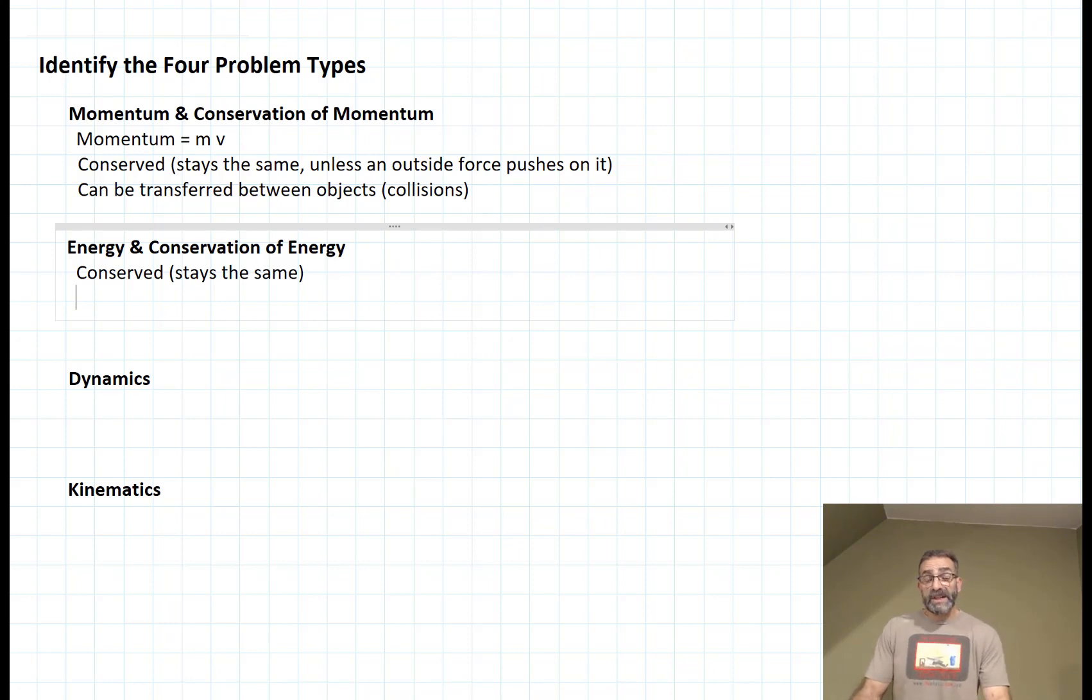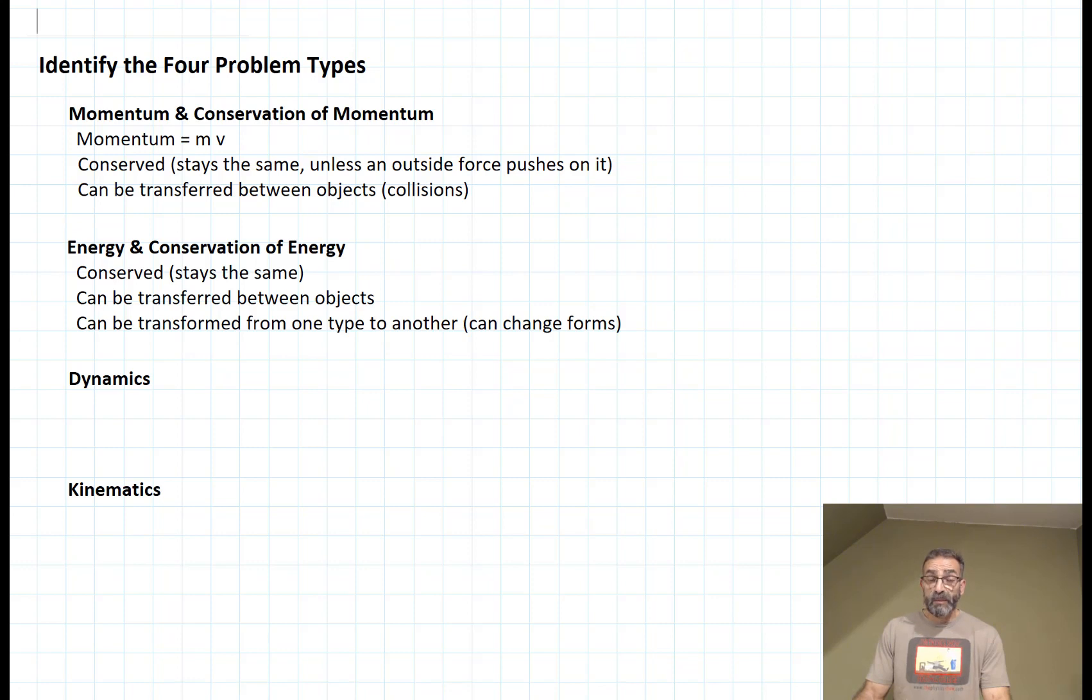Energy is also conserved when we don't allow energy to enter or leave our system - it stays the same. It can also be transferred between two objects like momentum, but unlike momentum it can be transformed from one type of energy to another type.